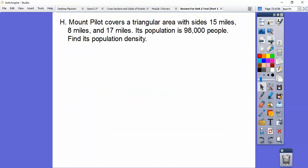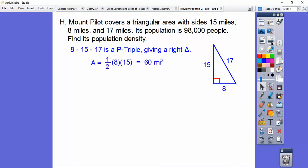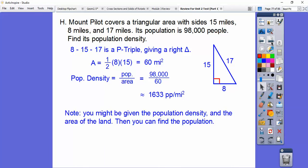Mount Pilot covers a triangular area with sides 15 miles, 8 miles, and 17 miles. Its population is 98,000 people. Find its population density. Population density is population divided by area. This is a right triangle because these are numbers for right triangles. The area of a right triangle is one-half base times height. The population density is the division of those. We get about 1,633 people per square mile. You might be given the population density and the area of the land, and so you can find the population by making this over one and then cross multiplying. So just be aware, you might see something like that.